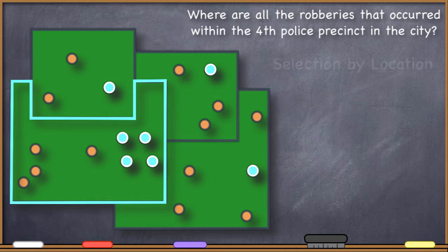Well, that's selection by location. So you'd run a selection by location on those robberies that have already been selected by the SQL query and that relates to the precinct that has already been selected as well.